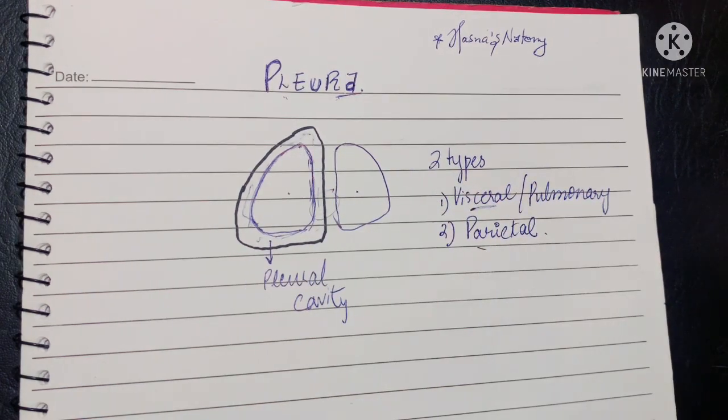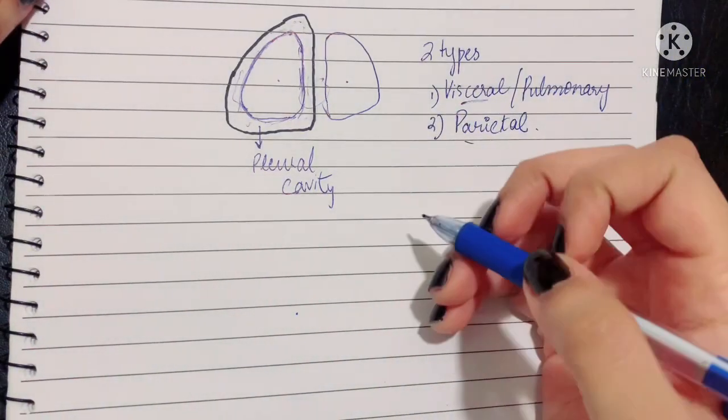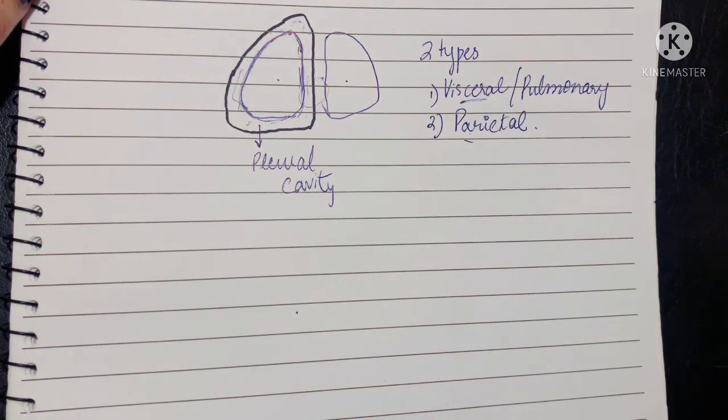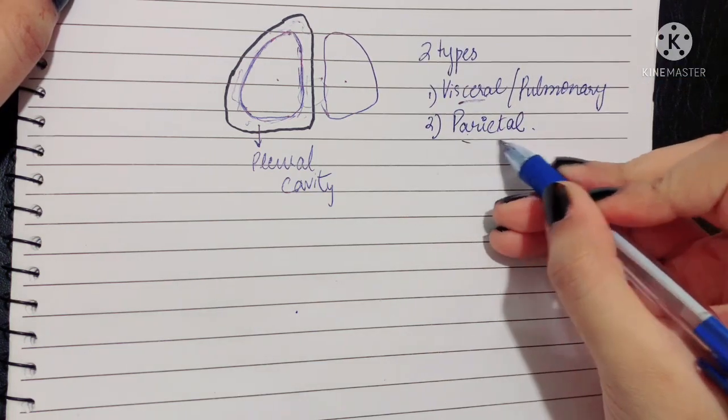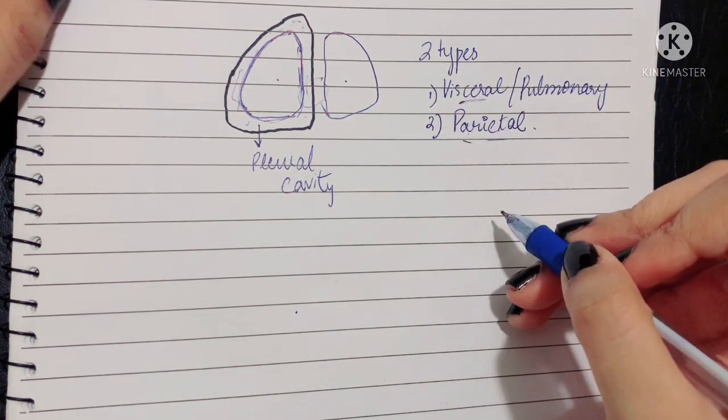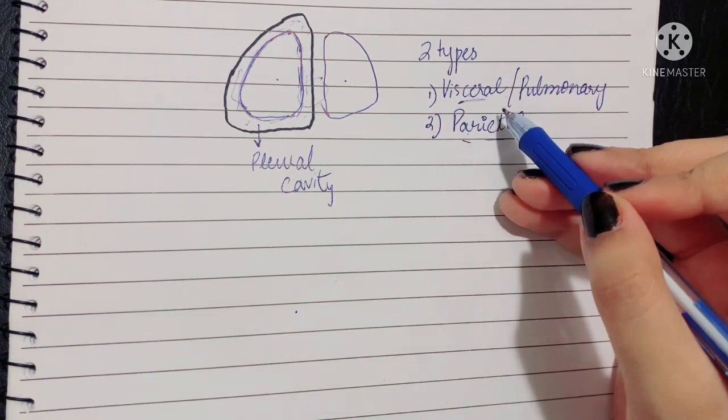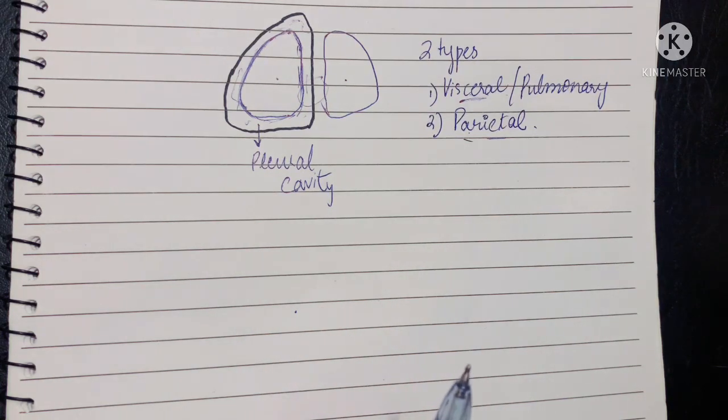Let's quickly go over the nerve supply of these two pleura. It is very important to know that the parietal and visceral have a very important difference between them. The parietal pleura is derived from the somatopleuric layer of the lateral plate mesoderm in your embryonic life, while the visceral pleura is developed from the splanchnopleuric layer of your lateral plate mesoderm, and there is significance to this.